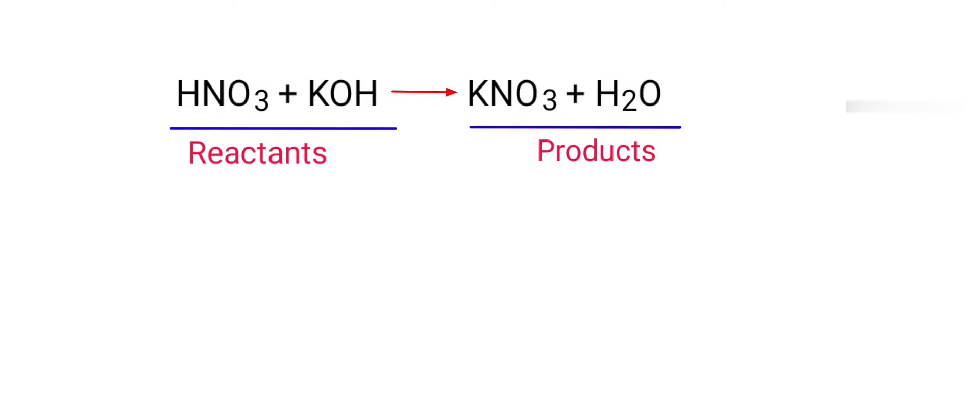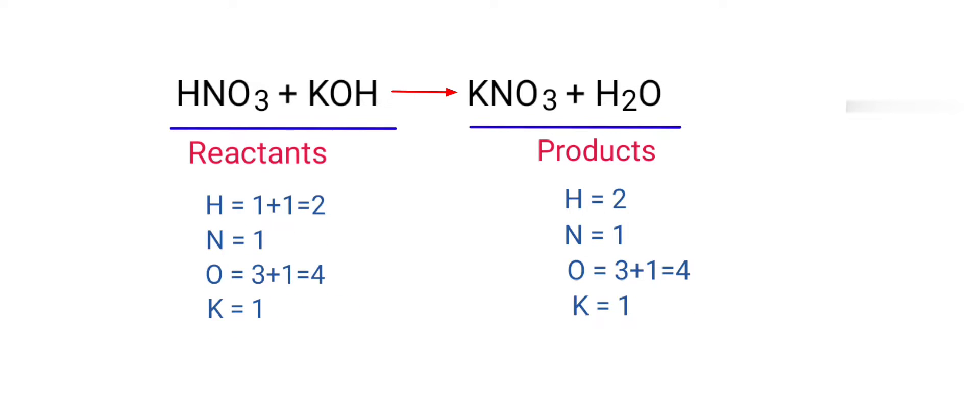In this equation the reactants are nitric acid and potassium hydroxide and the products are potassium nitrate and water. If you observe this equation, the number of atoms at the reactants side are the same as the number of atoms at the products side.